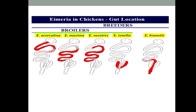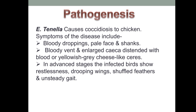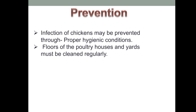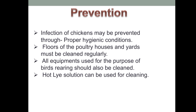This shows broilers and breeders of chicken with infected intestine. Eimeria tenella causes coccidiosis in chickens. Symptoms of the disease include bloody droppings, pale face and shanks, bloody vent, and enlarged caeca distended with blood or yellowish-gray cheese-like material. In advanced stages, infected birds show restlessness, drooping wings, ruffled feathers, and unsteady gait. Prevention: infection may be prevented through proper hygienic conditions; floors of poultry houses and yards must be cleaned regularly, and all equipment used for rearing should be cleaned; hot lime solution can be used for cleaning.